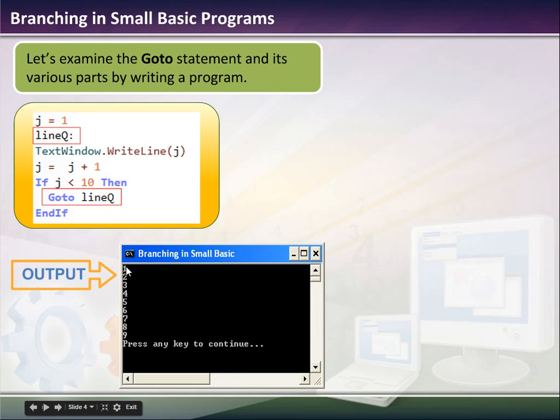The result is that the screen will print j, which starts off with a value of one, and then it comes down here and adds one to one, which makes it two, and then if j is less than 10, then it'll go right back to lineQ. So this is kind of like a for loop or a while loop, but this one we use an if-then statement. Goto just allows you to go to a certain part of the program wherever you define a specific line.